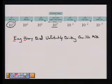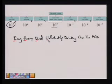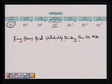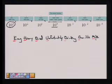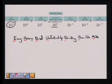You can see that the first letter of each word goes with each of the prefixes: K for kilo, H for hecto, D for deca, U for units, D for deci, C for centi, and M for milli. This is a nice way to remember the order of the metric units.